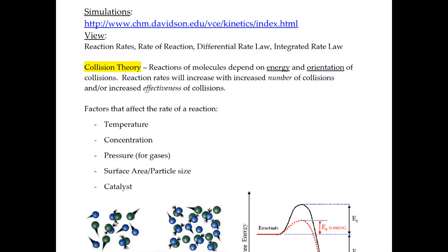Today we're on page 11 of the Chapter 12 AP Chemistry Packet and we're going to be talking about Collision Theory. This theory proposes that reactions of molecules depend on the energy and the orientation of the collisions. Reaction rate will increase with increased number of collisions and/or increased effectiveness of collisions. So if you want a reaction to be faster you can either impact the number of collisions and/or you can impact the effectiveness of collisions.